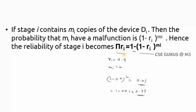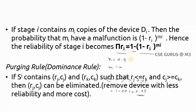The purging rule (or dominance rule), similar to the knapsack problem, says: if you have two pairs (r_j, c_j) and (r_k, c_k) where r_j < r_k and c_j > c_k, then eliminate the pair (r_j, c_j). We remove a pair where reliability is less and cost is more, since we always want higher reliability with lower cost.